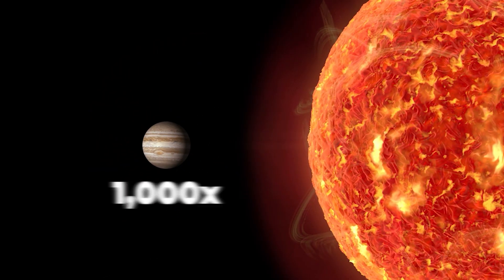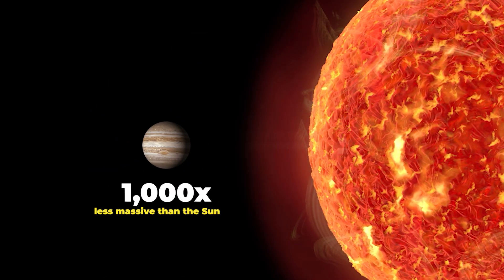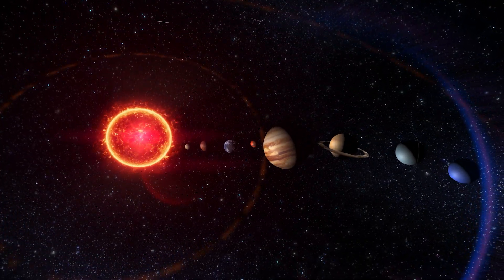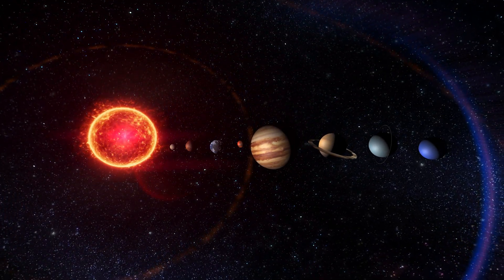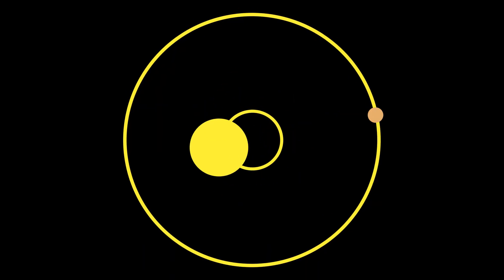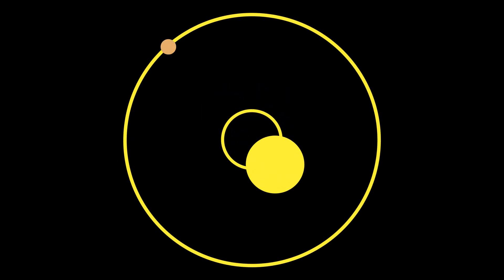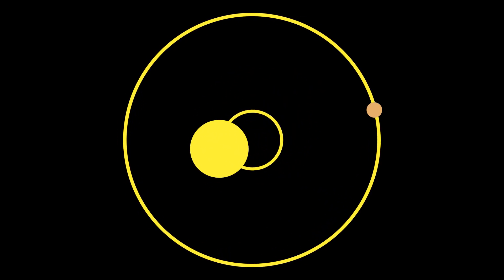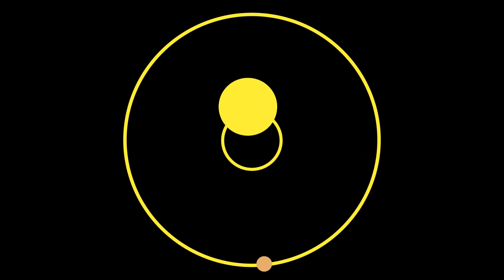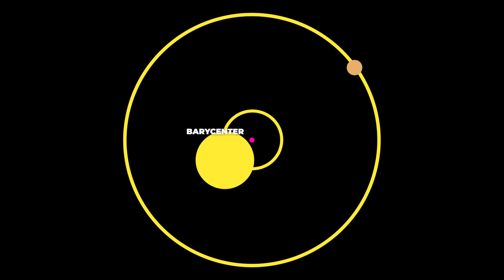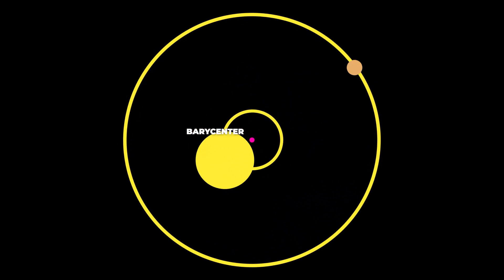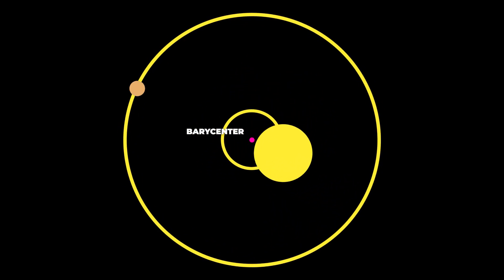Jupiter is a thousand times less massive than the sun, but it's the second most massive object in the solar system. The barycenter of Jupiter and the sun isn't at or near the center of the sun — it's actually outside the sun's surface. The center of mass is never a hundred percent at the center of the sun.